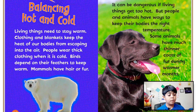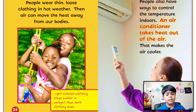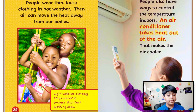Some animals have much thinner coats of fur during warmer months. As you can see in the picture, this dog takes short quick breaths to cool off when it is hot. People wear thin, loose clothing in hot weather so air can move the heat away from our bodies. Light-colored clothing stays cooler in sunlight than dark clothing does.